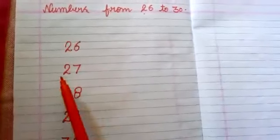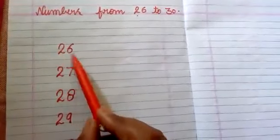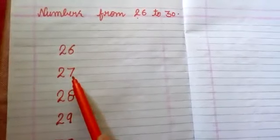Look at it here. Read with me. 2, 6, 26, 2, 7, 27, 2, 8, 28, 2, 9, 29, and 3, 0, 30.